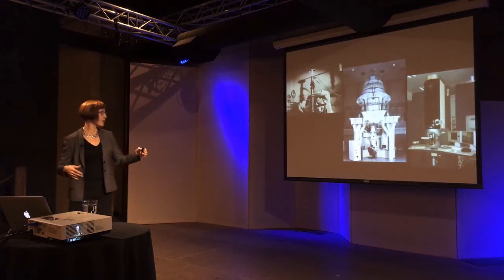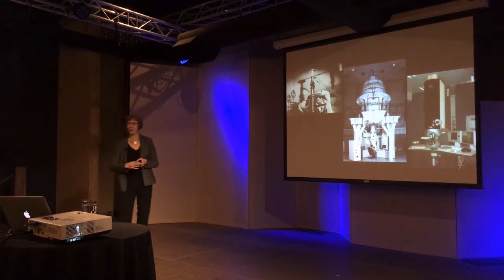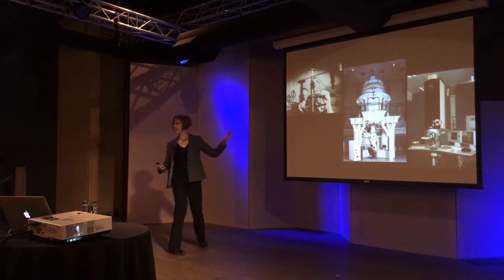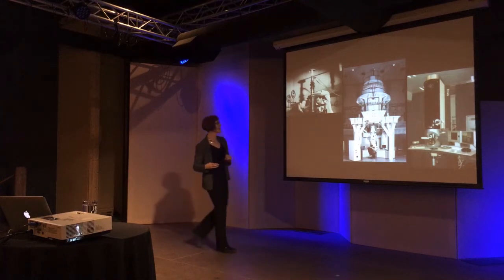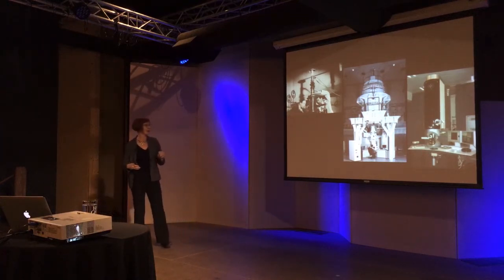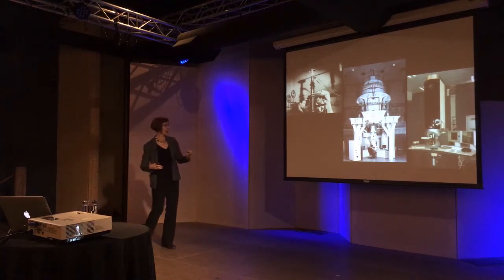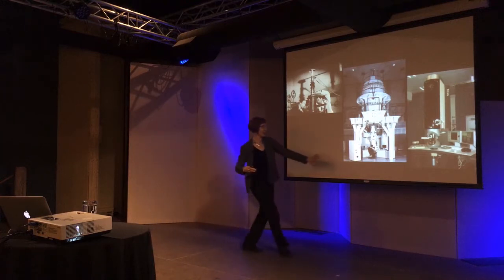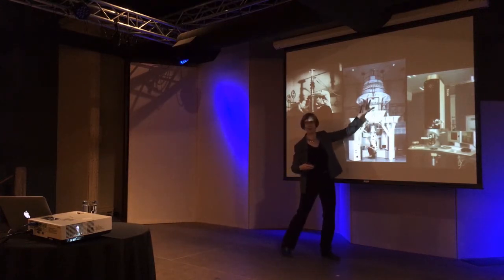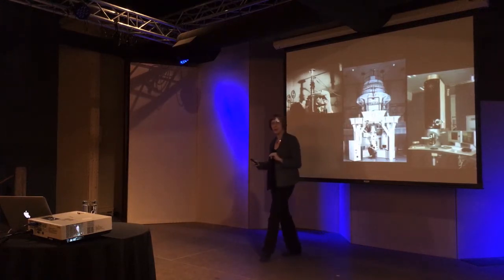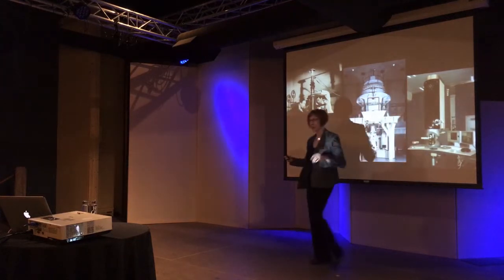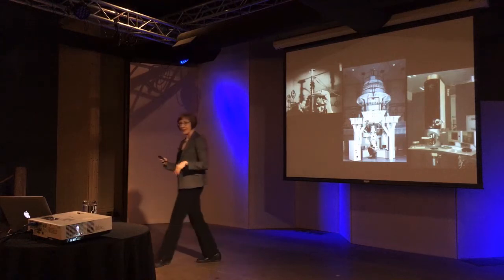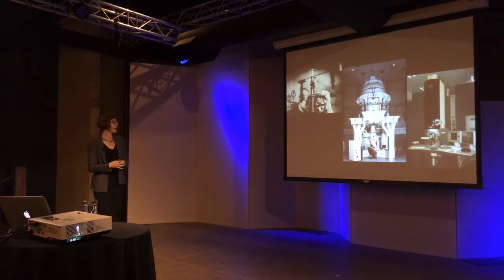An electron microscope was invented in the 1930s — this is the first one, with Ernst Ruska and one of his graduate students building it. In the 1990s the Japanese made really large ones; there's a person here next to a very high voltage electron microscope. And this is the modern one at Oregon State University — it's a little more manageable in size, only about nine feet tall.